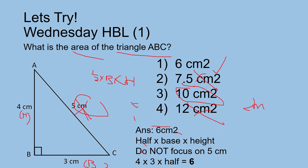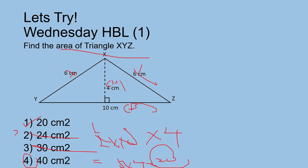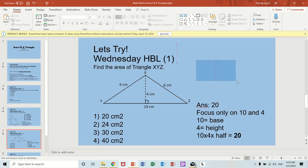Area of triangle XYZ. Height, base. Don't care about this. Half times 10 times 4, which is 5 times 4, which is 20. Common answer 40. The answer is 20. Don't focus on six. Always remember, do not focus on the number 6.